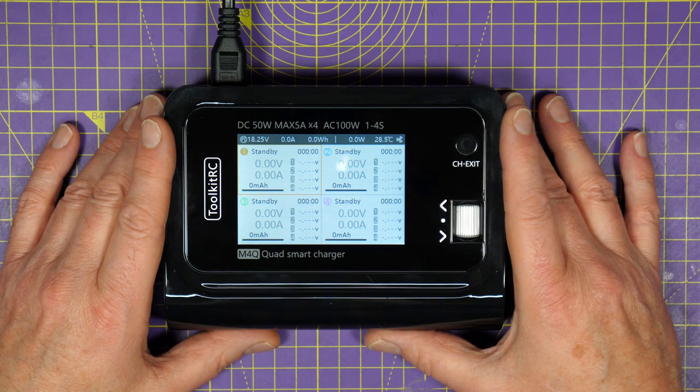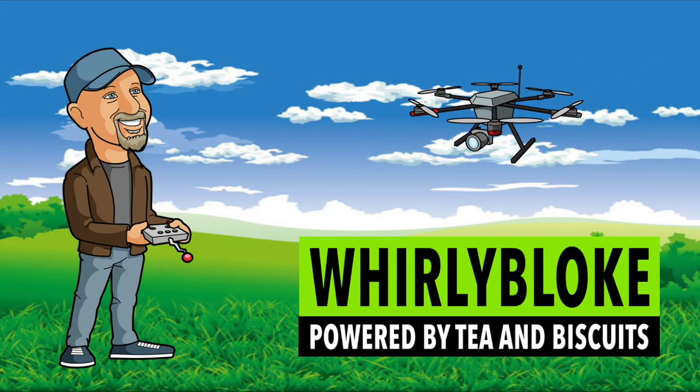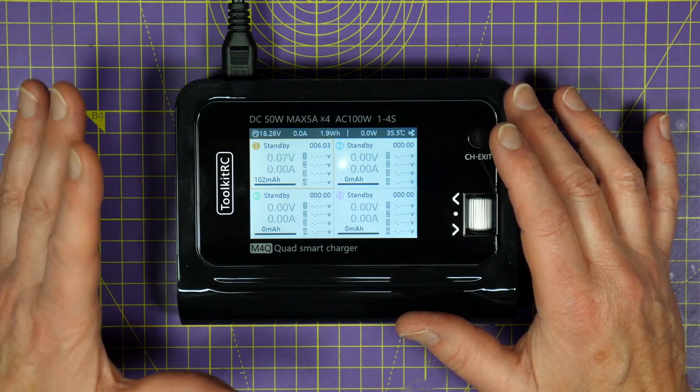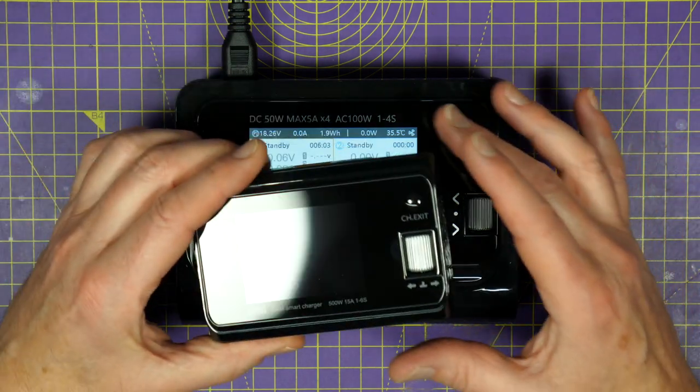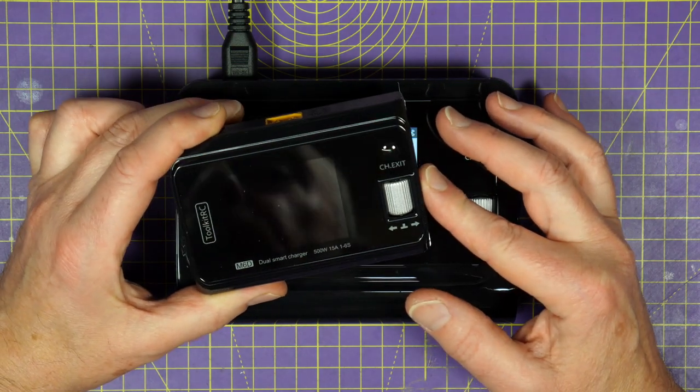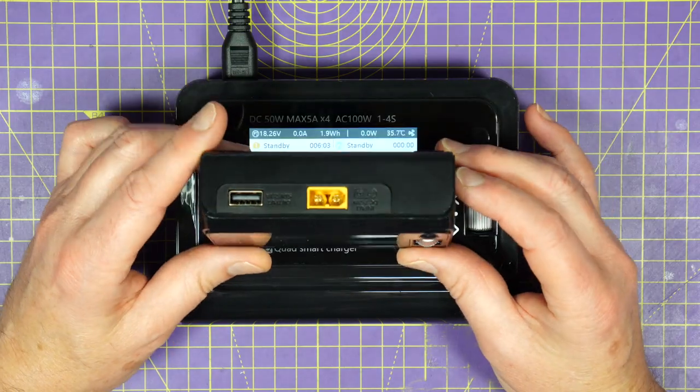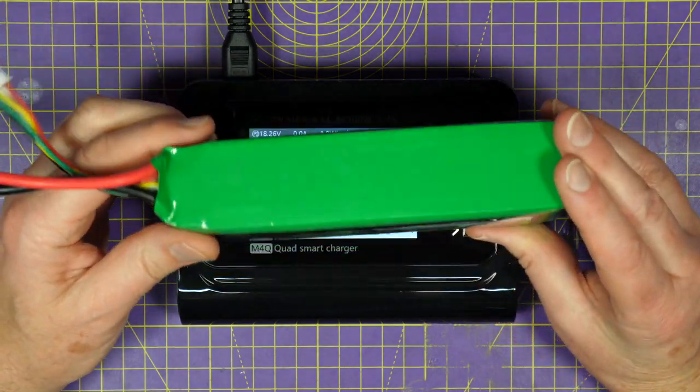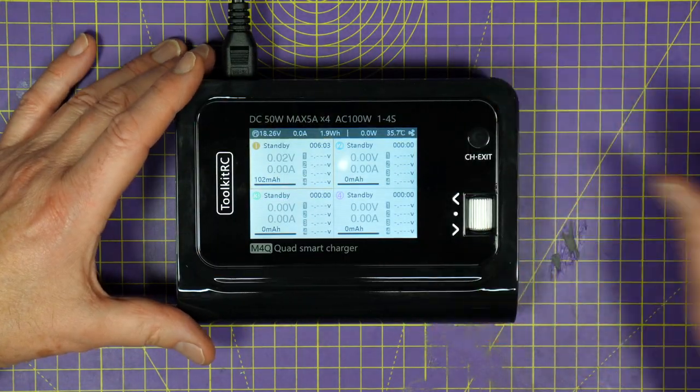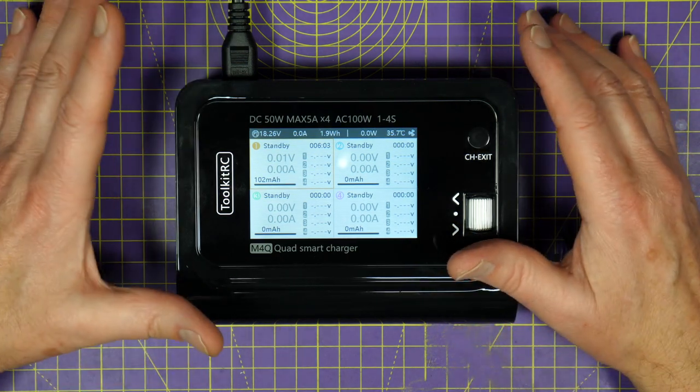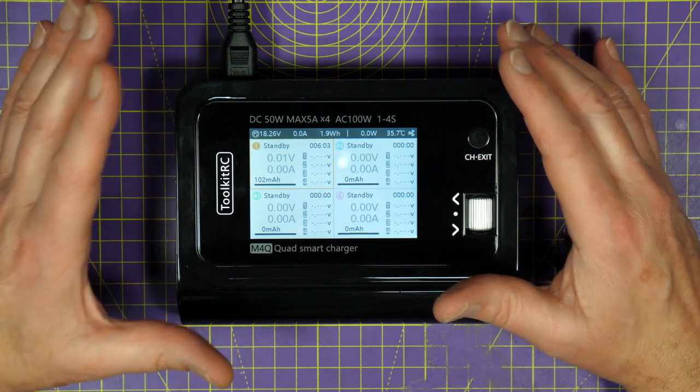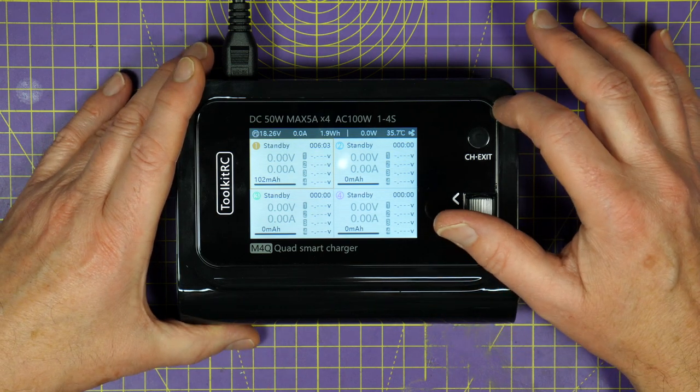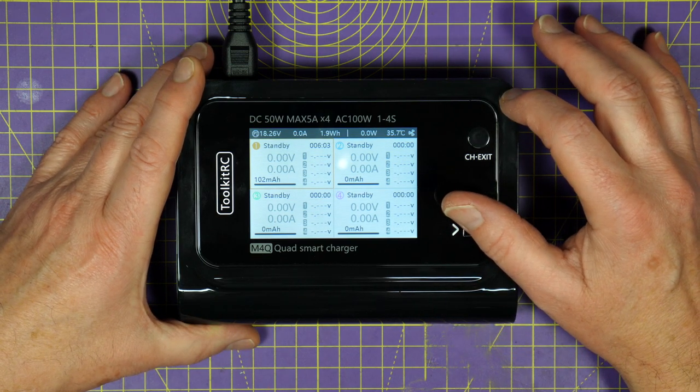Hello and welcome to the Whirly Bloke channel. If you've watched my channel before, you'll know I've reviewed pretty much all of Toolkit RC's chargers. And this M6D is currently my daily charger. But I need to power it from my 24V 100A DC power supply when I'm at home. And when I'm out in the field, I use this old 10Ah LiPo. Now, this new M4Q charger, and I guess the Q stands for Quad, is great because not only is it a quad charger, you can just plug it into a mains outlet, which is so convenient when you're at home. And you can plug it into a DC power supply as well if you want to get the most power out of it, but I'll talk about that a bit later.